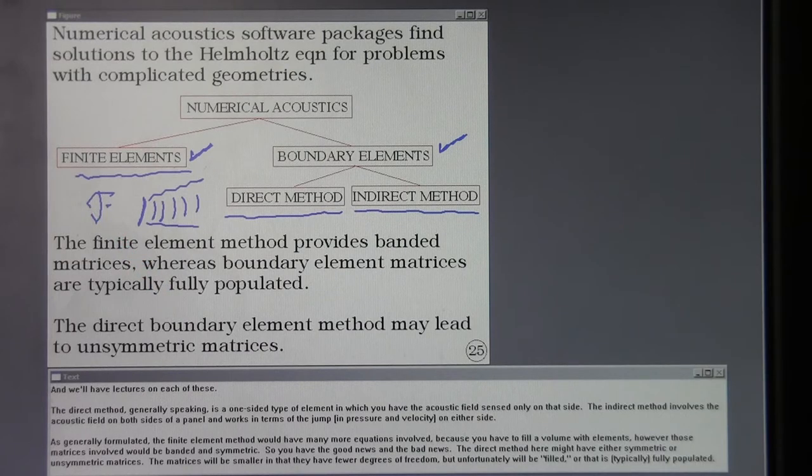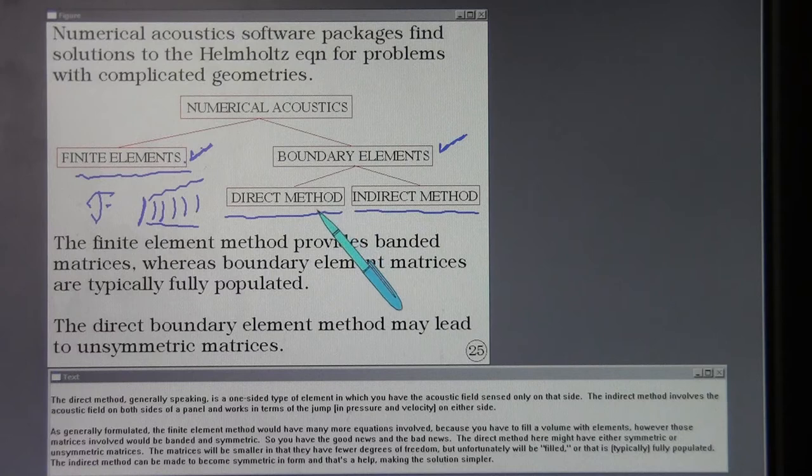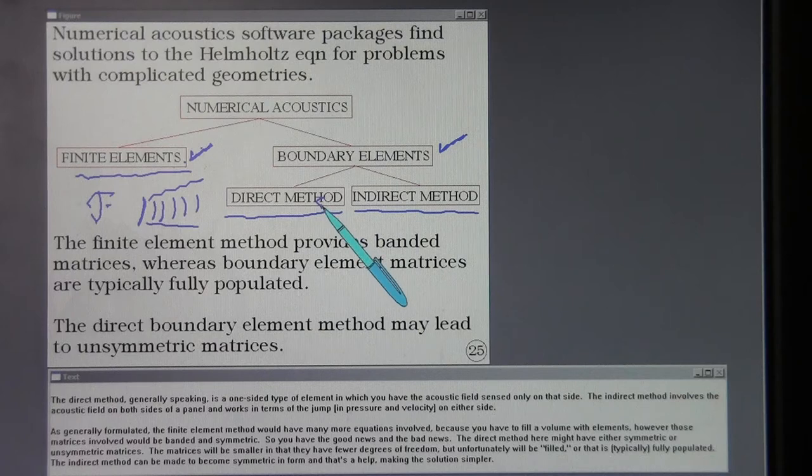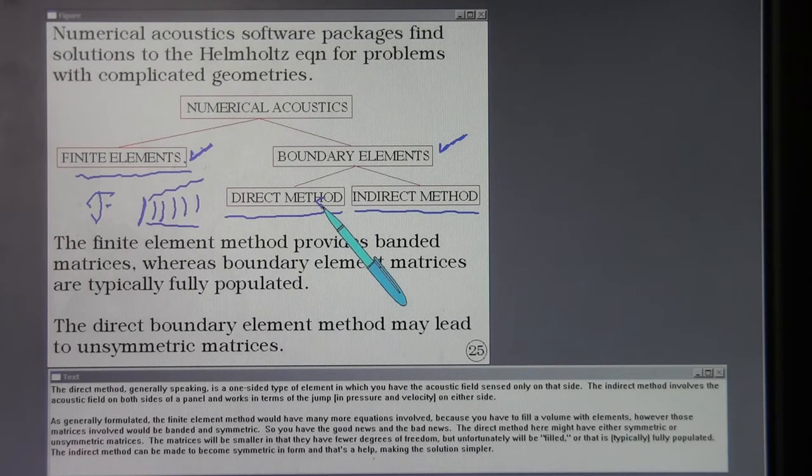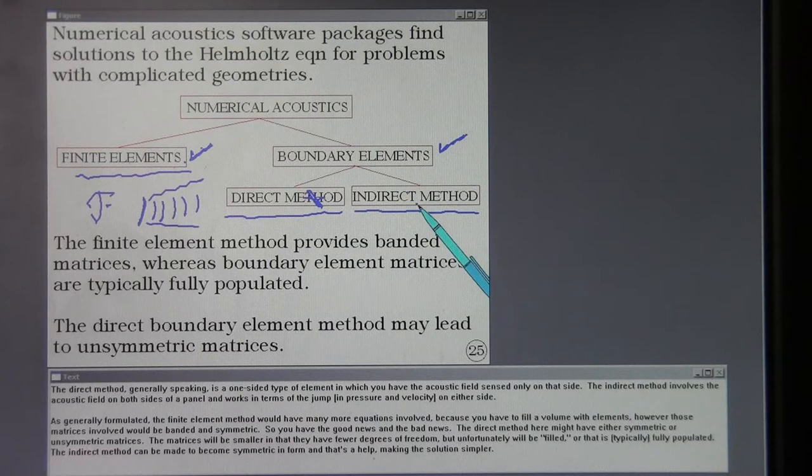As generally formulated, the finite element method would have many more equations involved because you have to fill a volume with elements. However, those matrices involved would be banded and symmetric. The direct method here might have either symmetric or unsymmetric matrices. The matrices will be smaller in that they have fewer degrees of freedom but unfortunately will be filled or that is typically fully populated. The indirect method can be made to become symmetric in form and that's a help making the solution simpler.